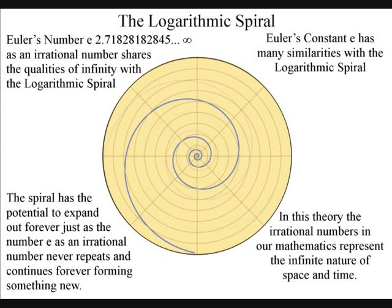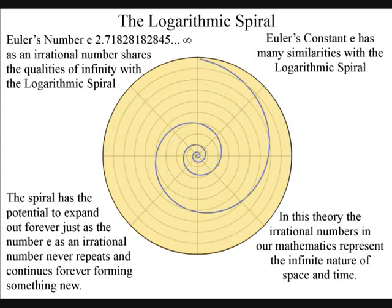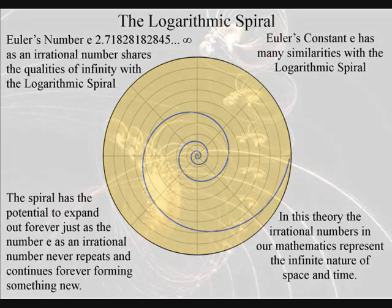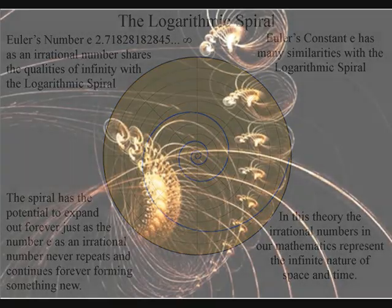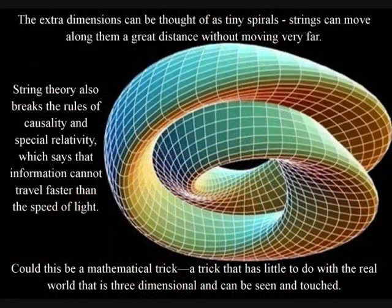For example, by following the path of a spiral, it is possible to go a great distance along it without moving very far. These extra dimensions can be thought of as tiny spirals. Strings can move along them a great distance without being visible.